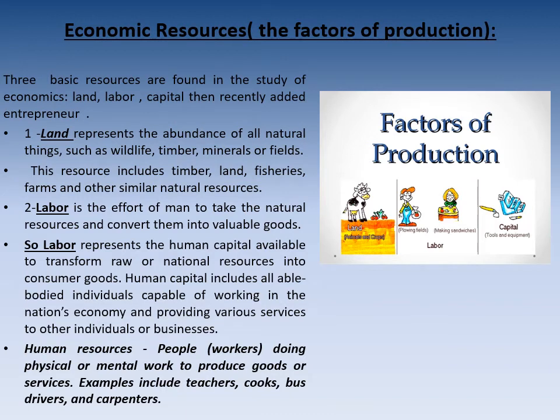Economic resources, or the factors of production — عناصر الإنتاج اللي درسناهم في microeconomics: land, labor, capital, entrepreneur. Land represents any natural thing used in the production process, such as wildlife, minerals, or fields. The resources include land, fisheries, farms, and other similar natural resources — أي شيء طبيعي، gift from God — used in the production process: forest, water, soil, anything.